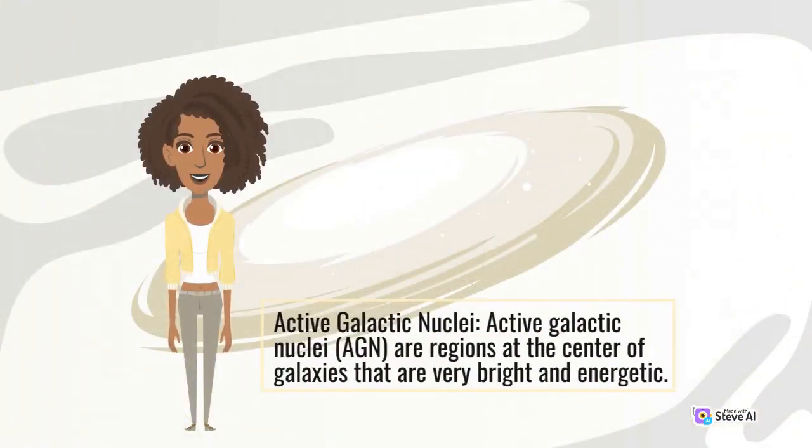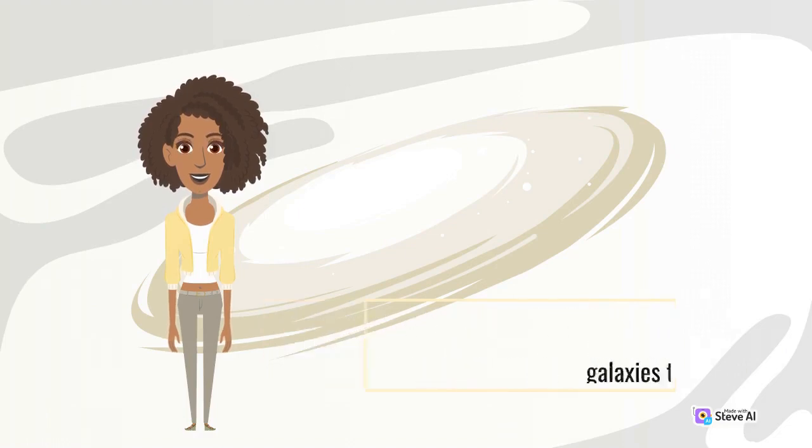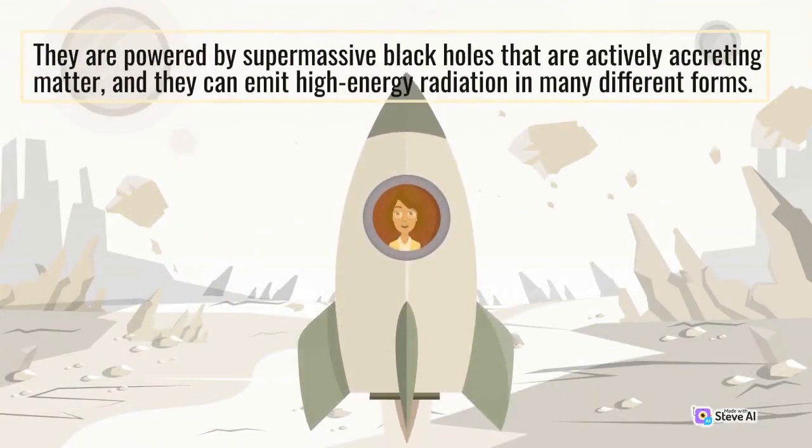Active galactic nuclei are regions at the center of galaxies that are very bright and energetic. They are powered by supermassive black holes that are actively accreting matter, and they can emit high energy radiation in many different forms.